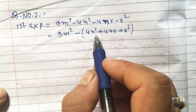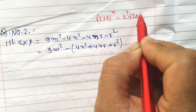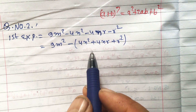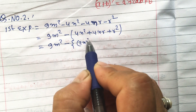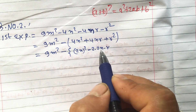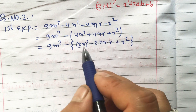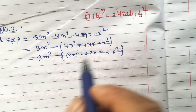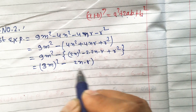The formula a plus b whole square equals a square plus 2ab plus b square applies here. We break it as 9m square minus 2n whole square plus 2 dot 2n dot r plus r square. This means a is 2n and b is r. So this equals 3m whole square minus 2n plus r whole square. Now applying a square minus b square formula.